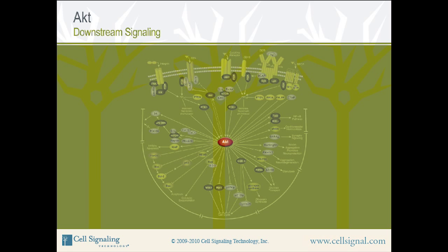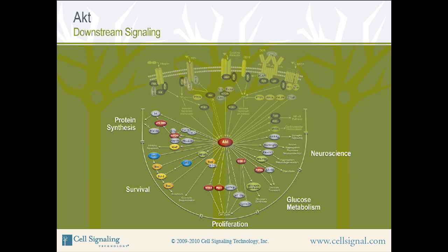AKT Downstream Signaling: Now let's take a look at the downstream signaling that takes place once AKT has been phosphorylated at threonine-308 and serine-473. Active AKT phosphorylates a large number of downstream substrates that can be grouped by their effects on protein synthesis, survival, proliferation, glucose metabolism, neuroscience, and other cellular effects. It should be noted that this is a representational diagram and not a complete list of AKT substrates.